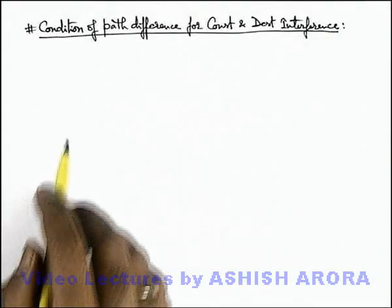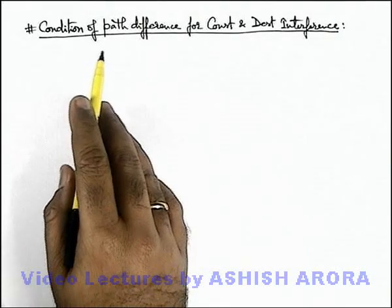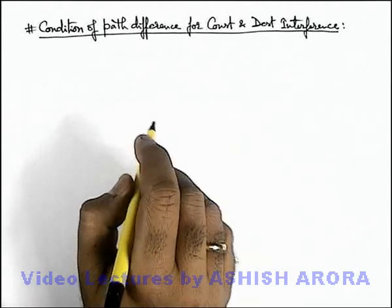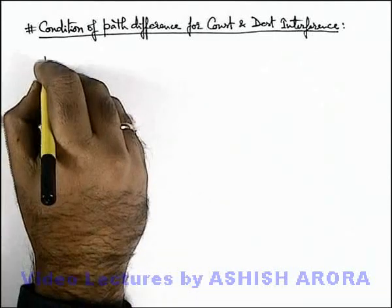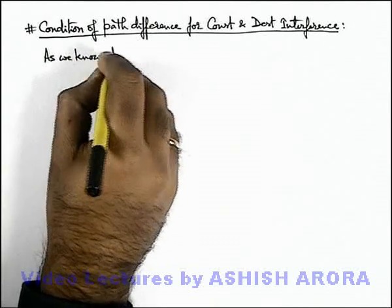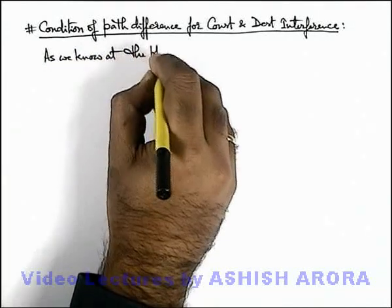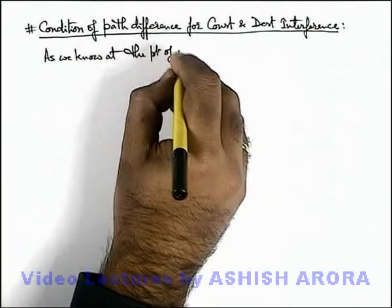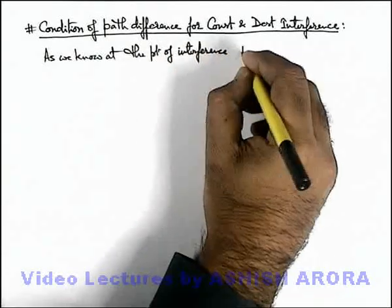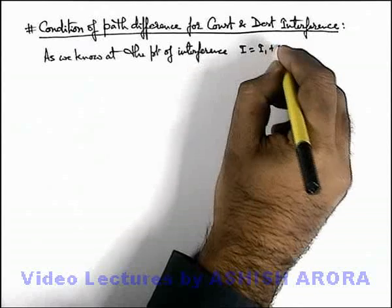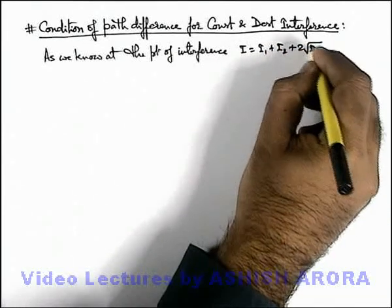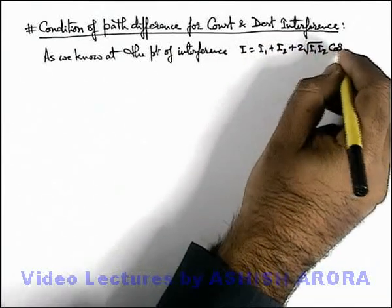Now we'll study about the condition of path difference for constructive and destructive interference. At the point of interference, the resulting intensity is given as I₁ plus I₂ plus 2 root of I₁I₂ cos φ.